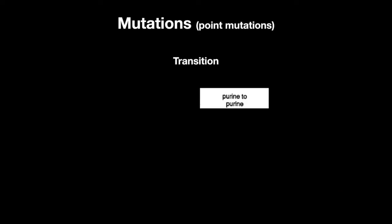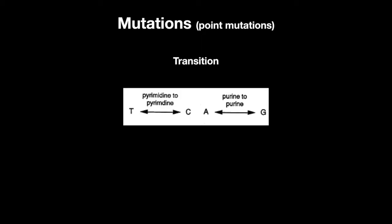A transition point mutation is a mutation in which a purine is substituted for another purine, for example, A to G, or a pyrimidine to a pyrimidine, C to T.